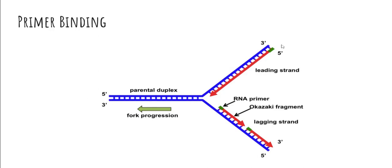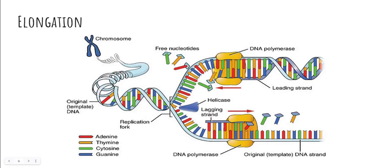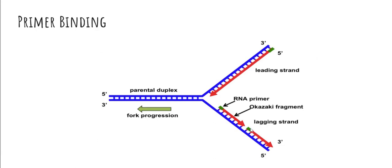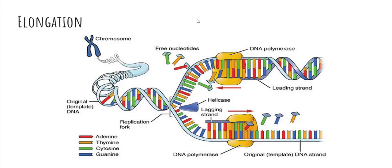DNA polymerase adds the base pairs from the bottom three prime to five prime strand, forming an identical copy of the original DNA. In the lagging strand, however, this needs to be done multiple times because there are many RNA primers. So in the leading strand, elongation happens once along the direction of fork progression. In the lagging strand, it happens multiple times since there are multiple primers and replication is in the opposite direction. DNA polymerases add free nucleotides to form the new strand.